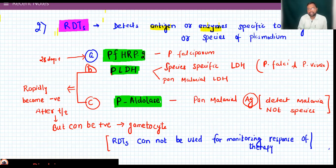What we have: plasmodium falciparum histidine-rich protein 2, first one. Second, we have plasmodium LDH. These are antigens or enzymes. This is for plasmodium falciparum LDH. We have species-specific LDH for plasmodium falciparum, and we have pan-malarial LDH.